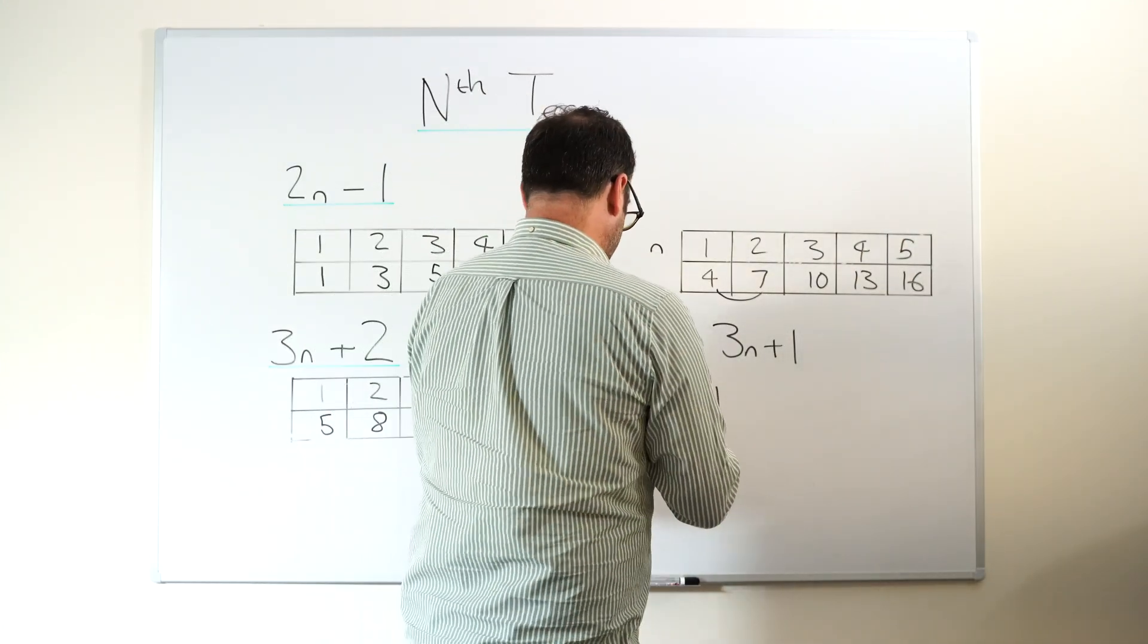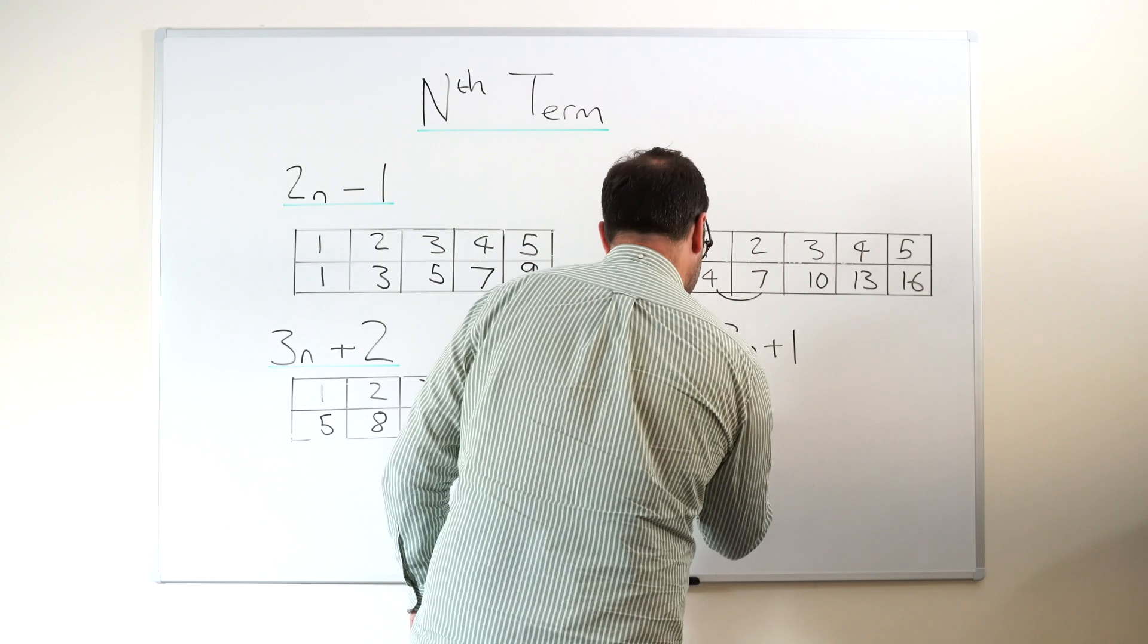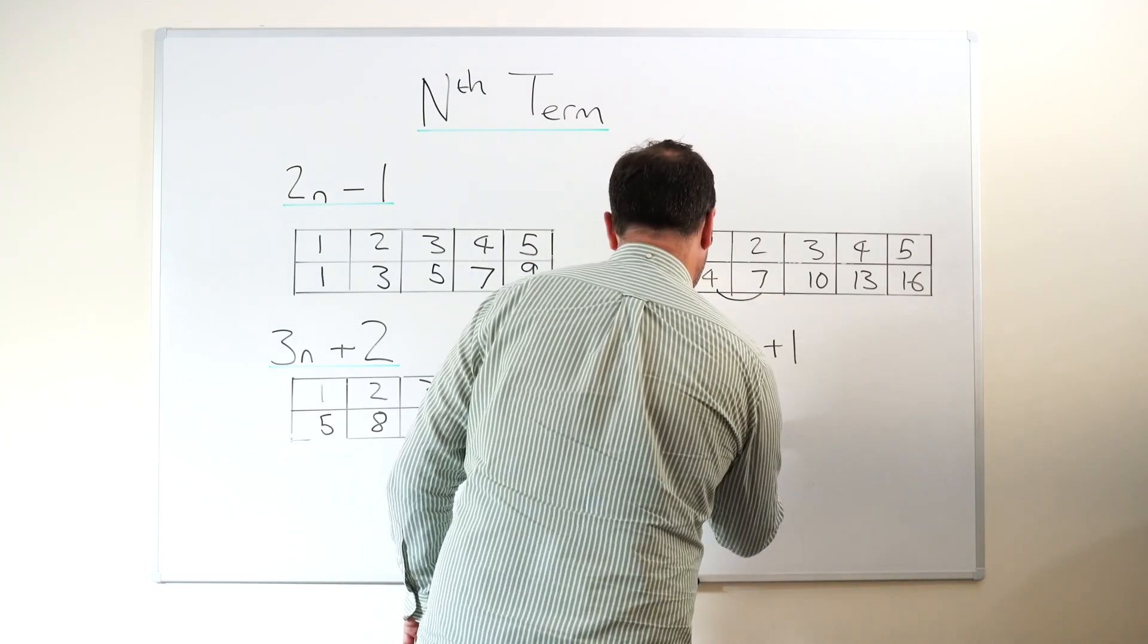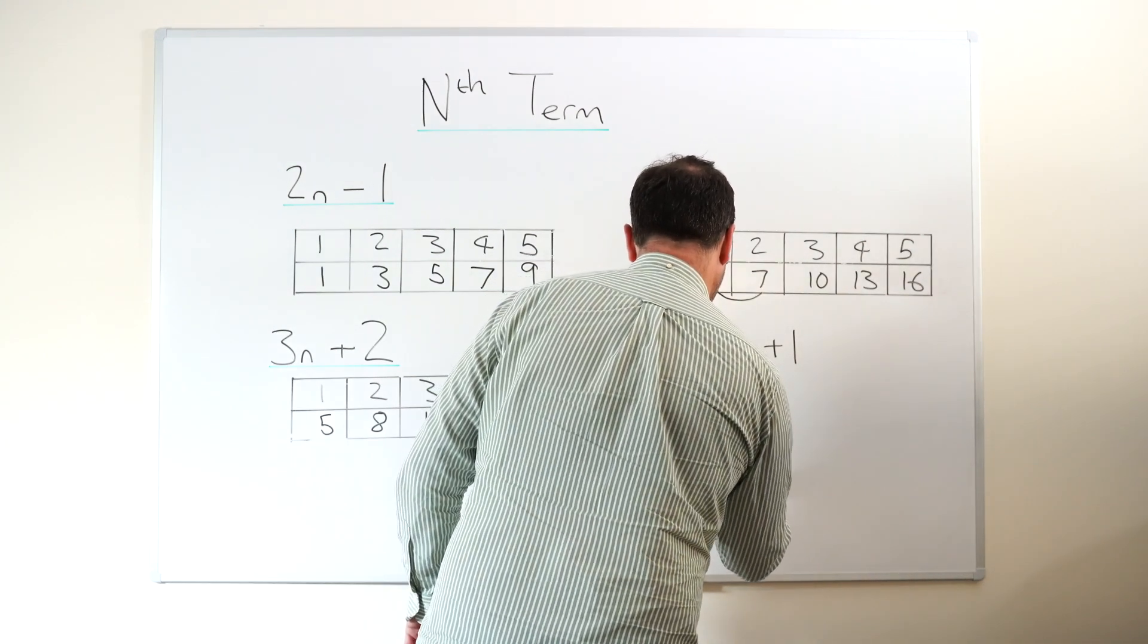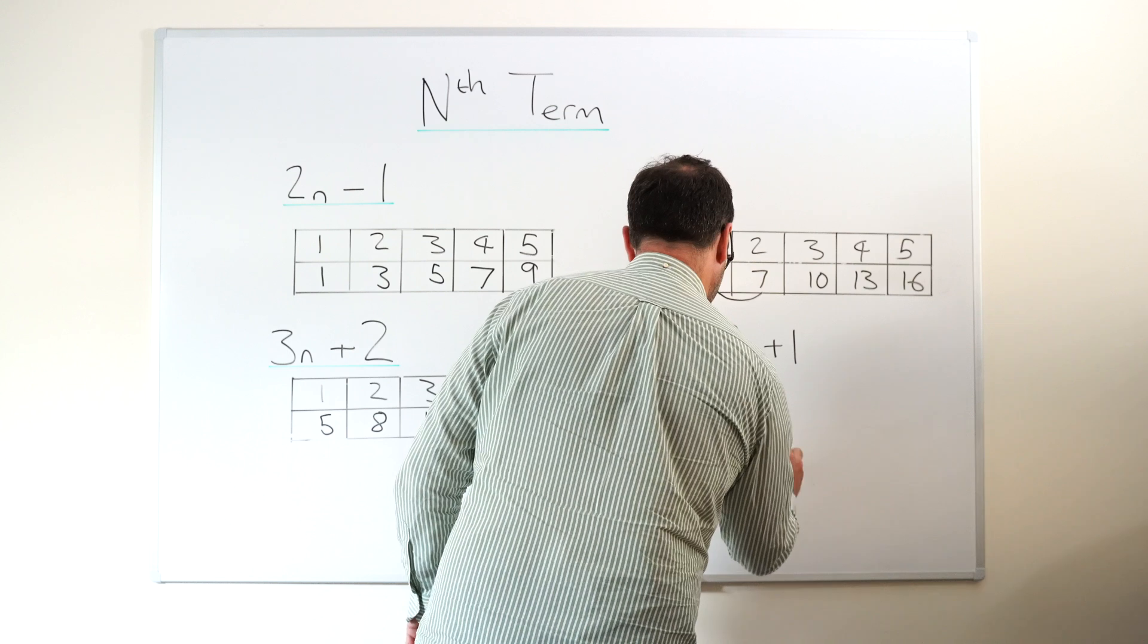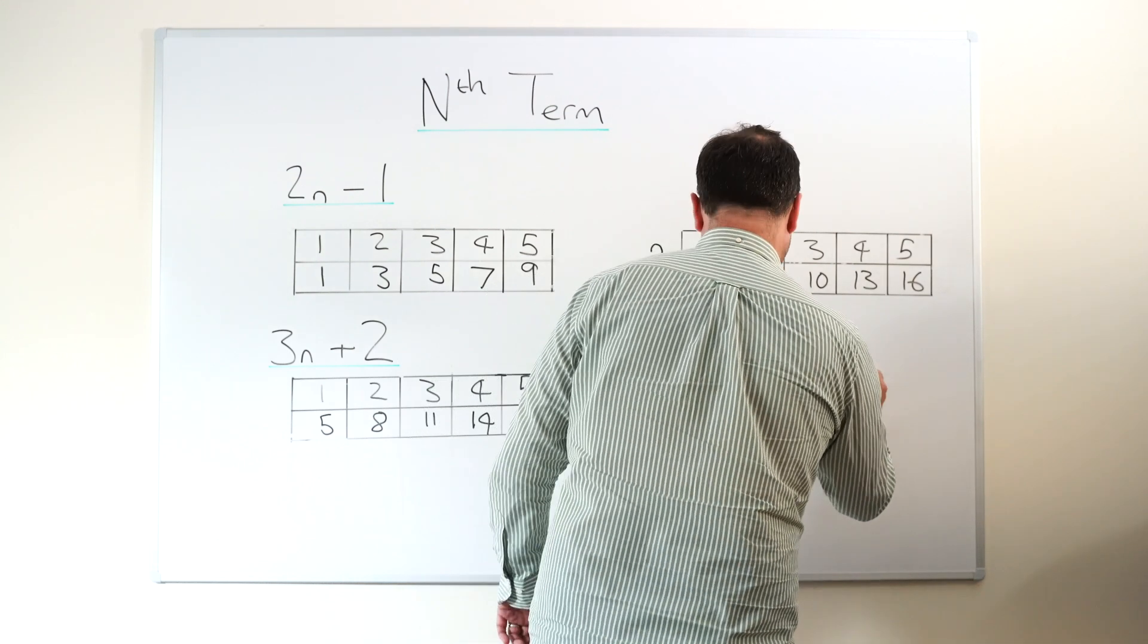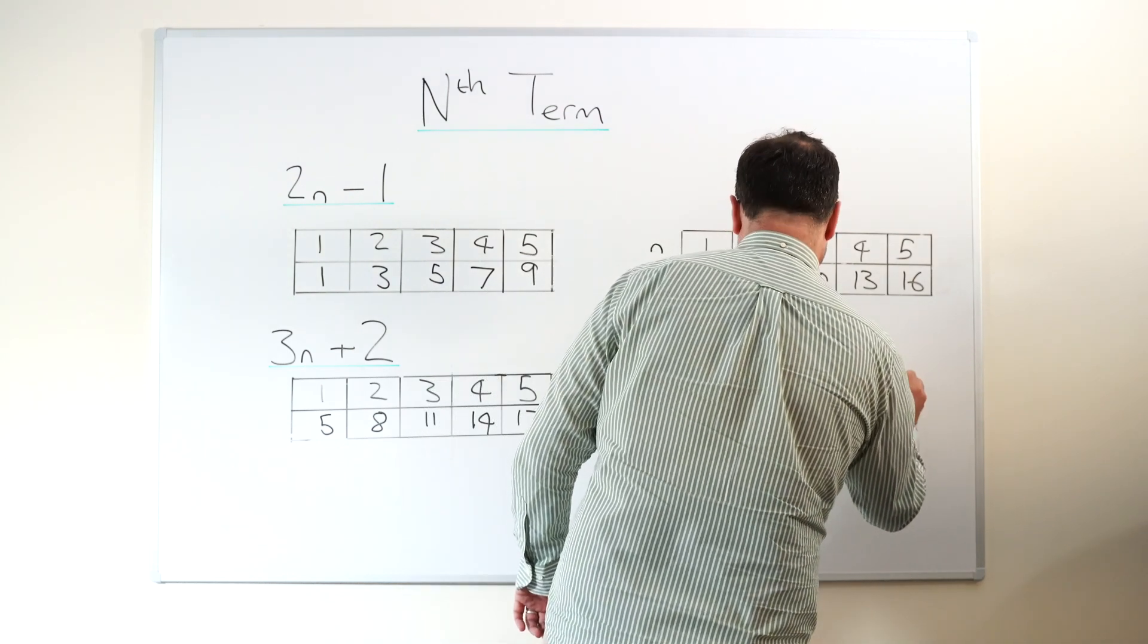So we've got 121 times three. So that's three, six, one, but then plus one. The answer is 364.